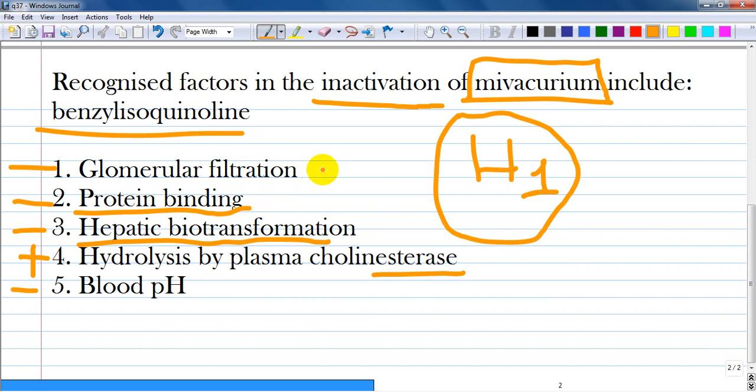Glomerular filtration is a part of drug excretion and does not participate in the metabolism. Blood pH does not participate either.